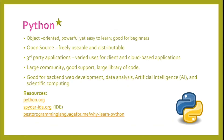We're going to start with Python, which gets a green star because we offer an in-person class on Python — actually two. Python is an object-oriented, powerful, yet easy-to-learn language, good for beginners. It's open source, freely usable and distributable, with varied uses for client and cloud-based applications. Python has a large community, good support, and a large library of code, which means you have access to a large group that can help you with any questions or problems. Python is good for backend web development, data analysis, artificial intelligence, and scientific computing.